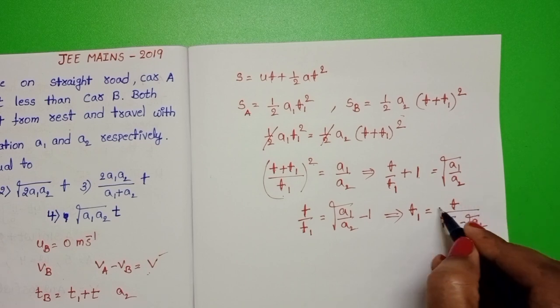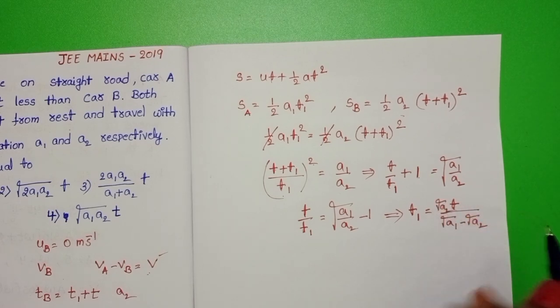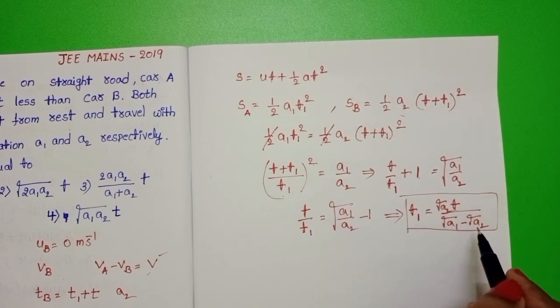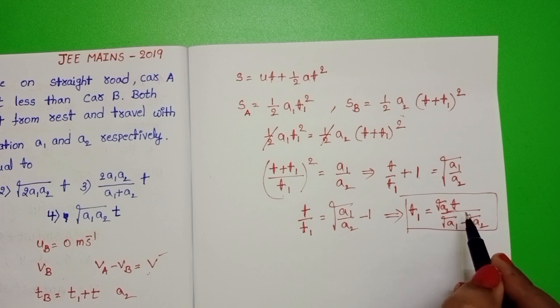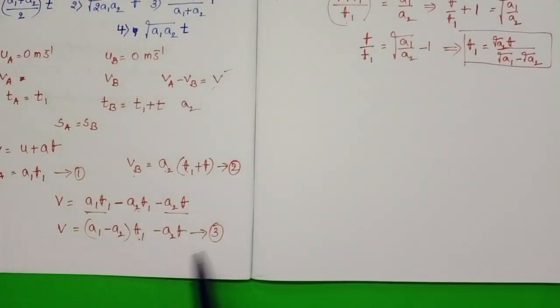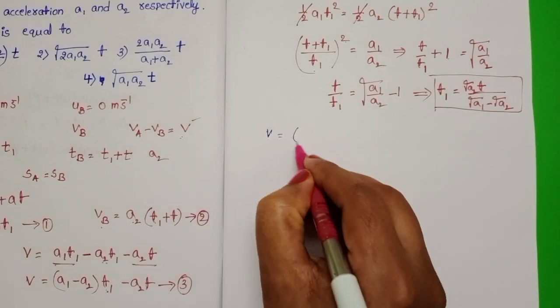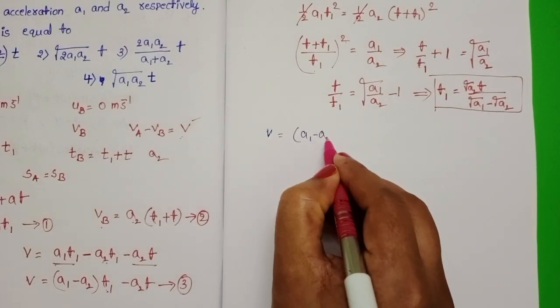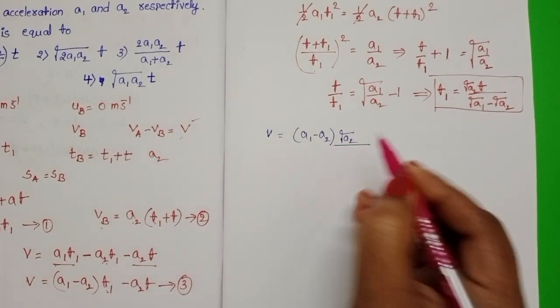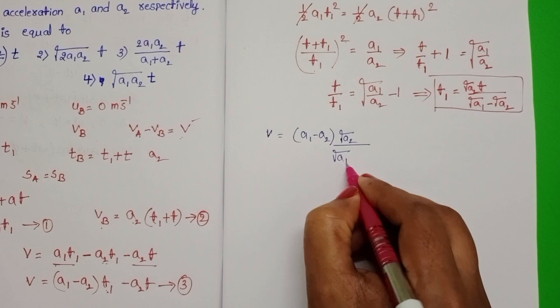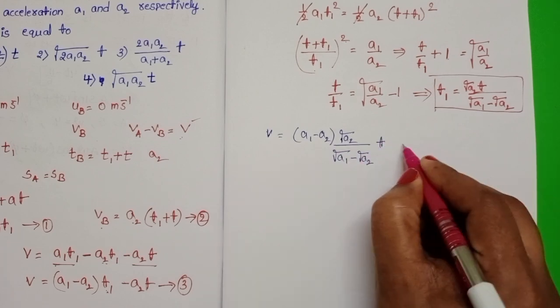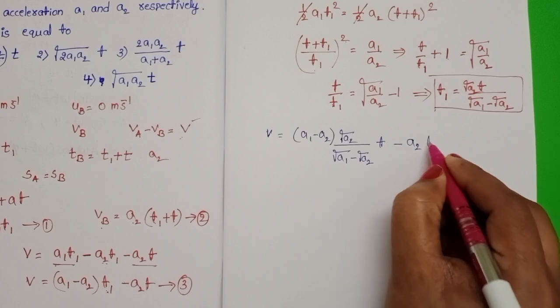So T1 is equals to square root of A2 by root A1 minus root A2 into T. Substitute T1 in third equation. V is equals to A1 minus A2 into in place of T1. Root A2 into root A1. Root A2 by square root of A1 minus square root of A2 into T minus A2 T.